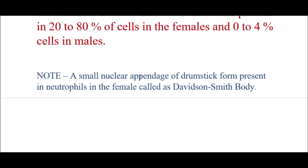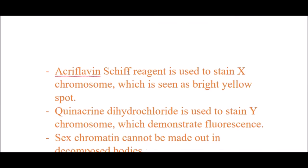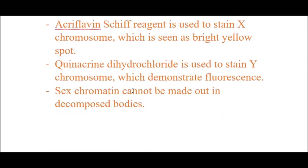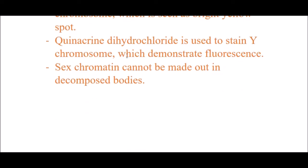A small nuclear appendage of drumstick form present in neutrophils in females is called the Davidson-Smith body — it is seen in neutrophils of females. Acriflavine Schiff reagent is used to stain the X chromosome, which appears as a bright yellow spot. Quinacrine dihydrochloride is used to stain the Y chromosome, which demonstrates fluorescence. Sex chromosomes cannot be determined in decomposed bodies — only in living persons or non-decomposed dead bodies.